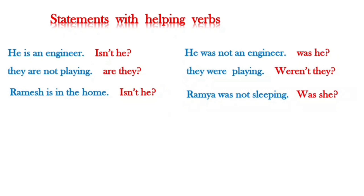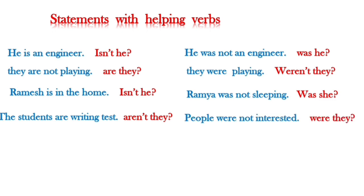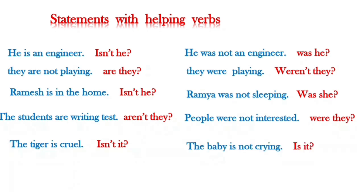For 'Ramesh was not sleeping' — the statement is negative, so the question tag is positive: 'Was he?' 'The students are writing test' → 'Aren't they?' 'People who are not interested' → 'Were they?' 'The tiger is cruel' → 'Isn't it?' 'The baby is not crying' — 'is' is the helping verb; the baby's gender may not be known, so we use 'it' → 'Is it?'